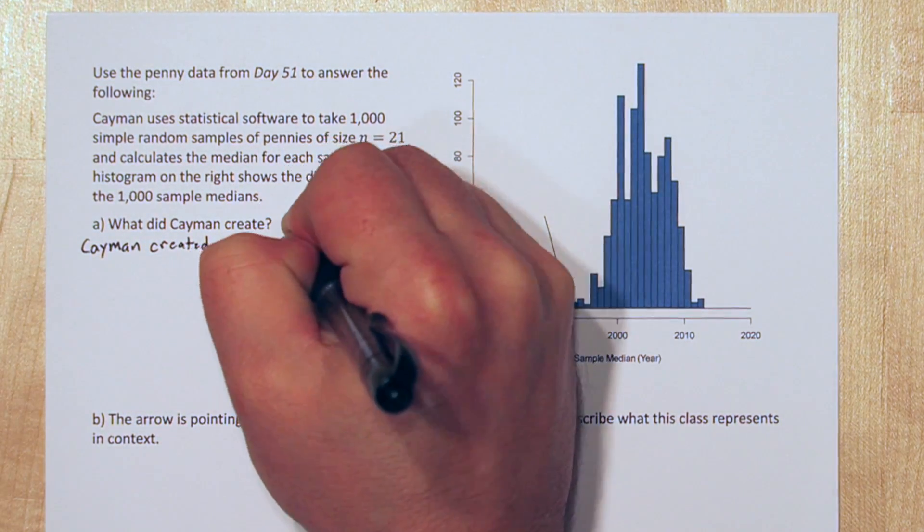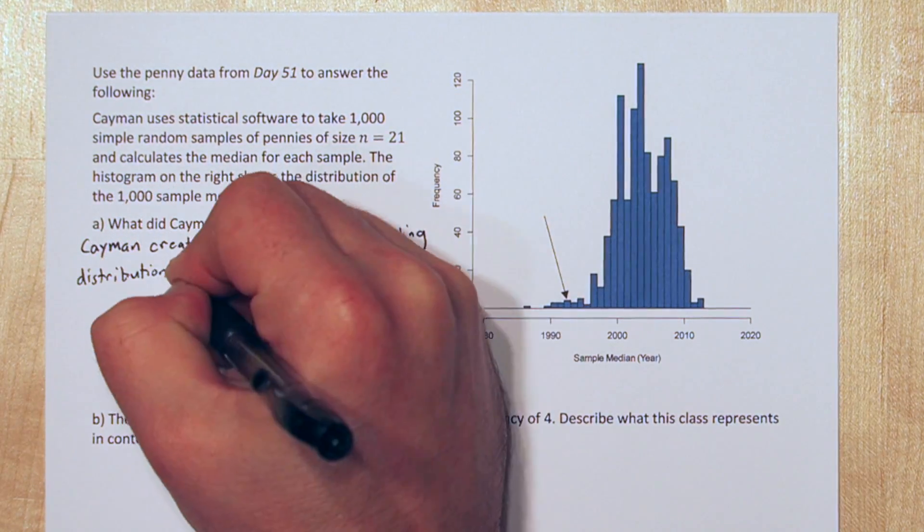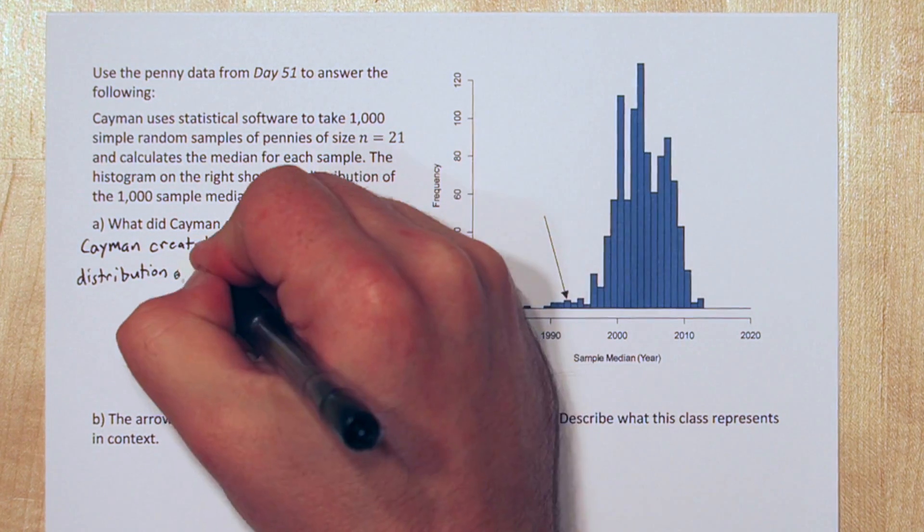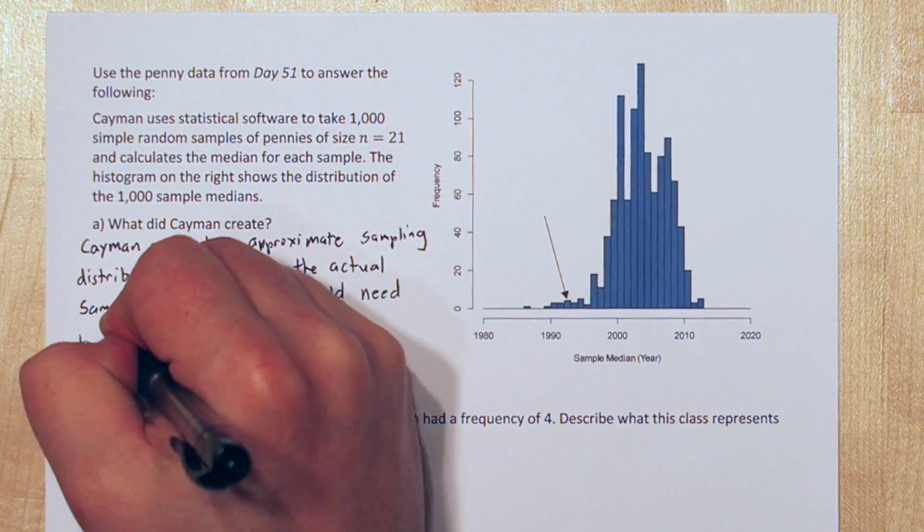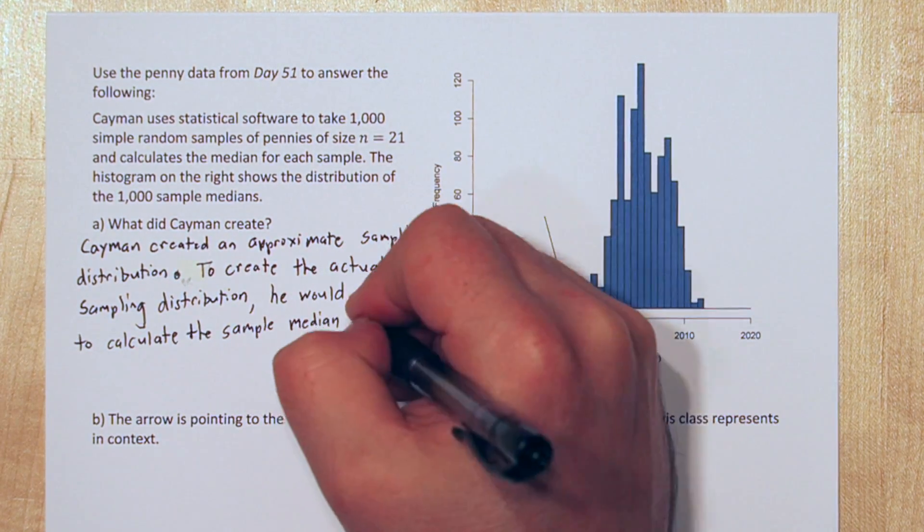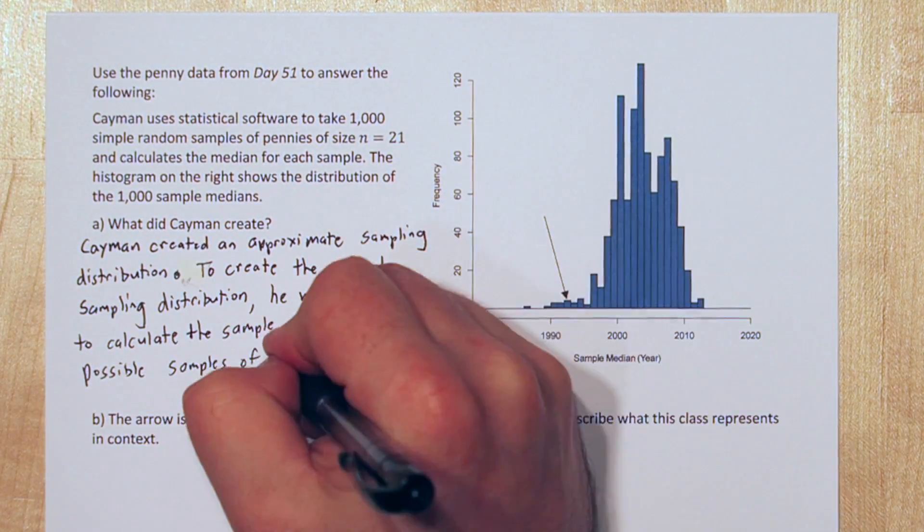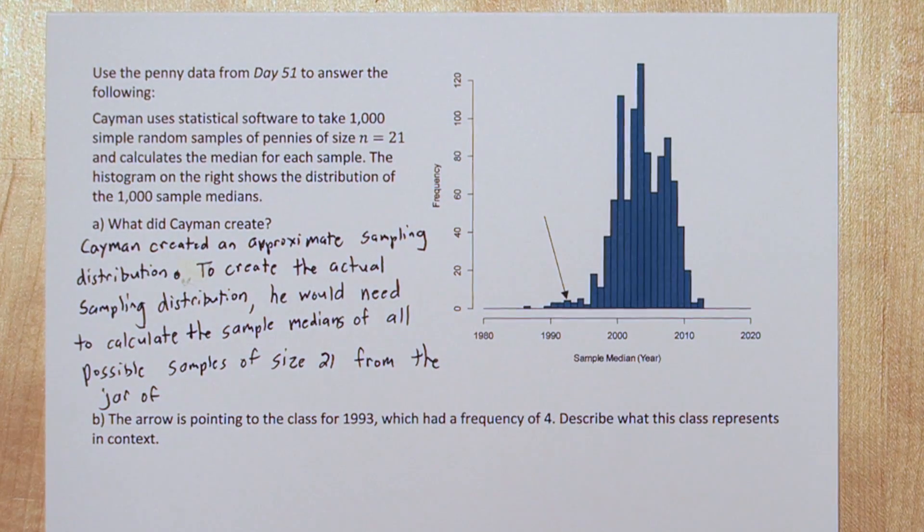In part A, we can see Cayman created an approximate sampling distribution. To create the actual sampling distribution, he would need to calculate the sample medians of every possible sample of size 21 from this jar of 742 pennies. He only used 1,000 samples of size 21 and calculated their medians, so this is just an approximation of the sampling distribution.